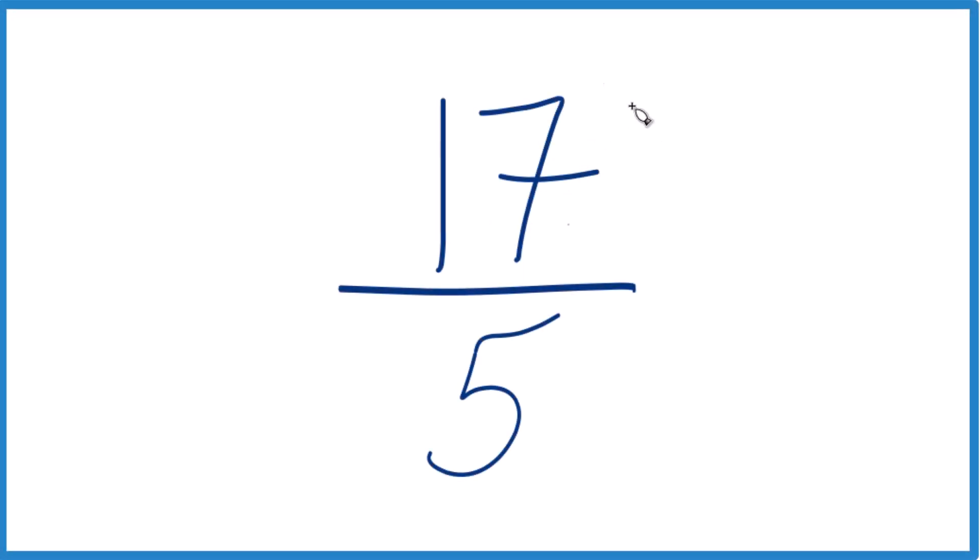Let's simplify the fraction 17 fifths, and we'll also write it as a mixed number. So when we want to simplify a fraction, we need to find a whole number that goes into 17 and 5 evenly.